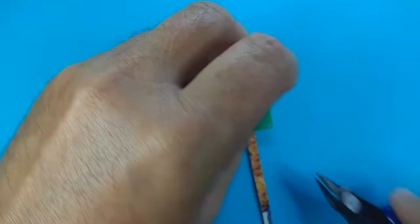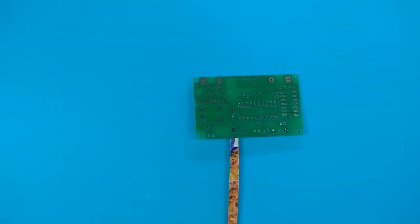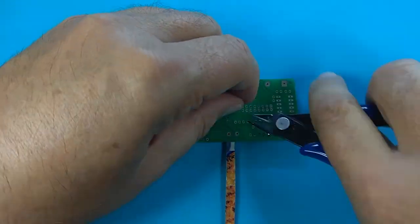According to the components height, he starts the soldering with the resistors. Look at him that he never bends the leads because it produces ugly soldering points.